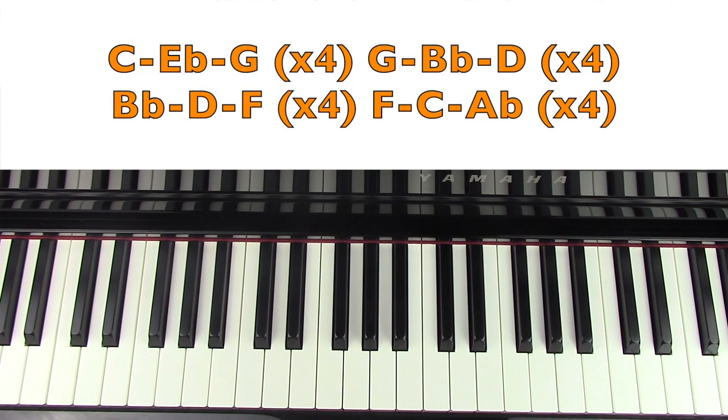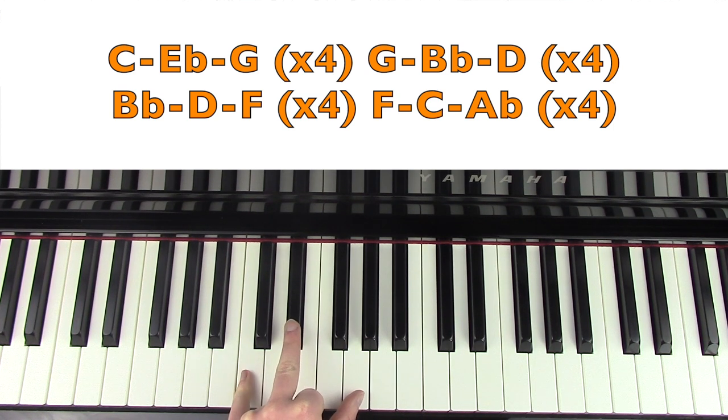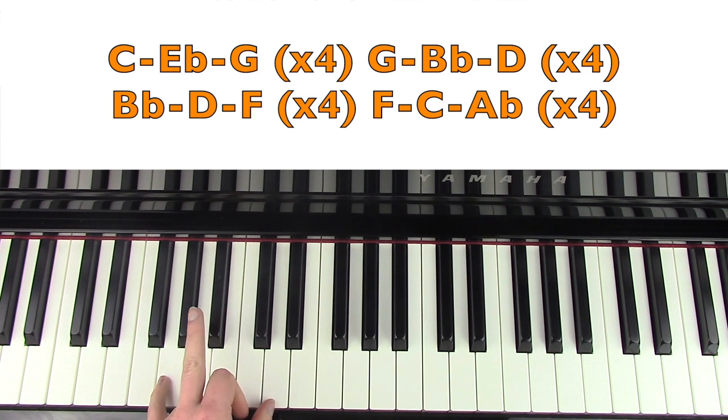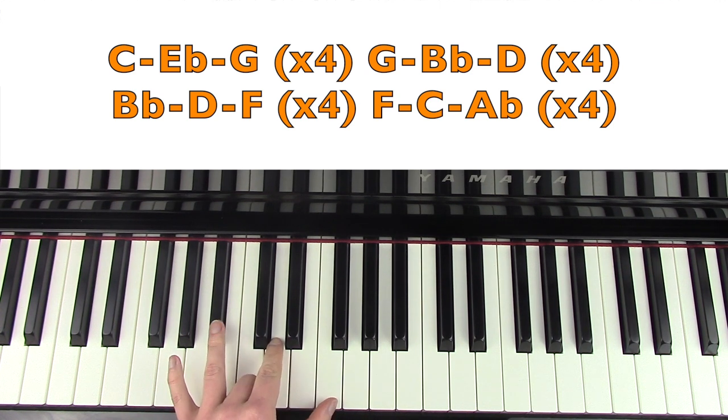Now we're going to look at the left hand, which I've just based around the chords. You could just sustain these if you wanted to, or to give the piece a bit more drive, you could break up the chords like this. The first chord is C minor, which is C, E flat and G, and you're going to play that four times. You can break it up from bottom to top: C, E flat, G, two, three, four. Then you're going to move to a G minor triad, which is G, B flat and D, and that's for four times as well.